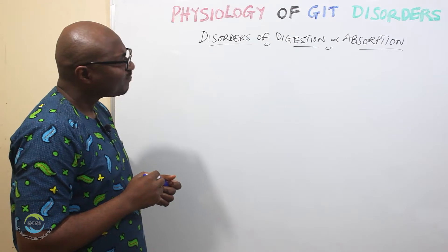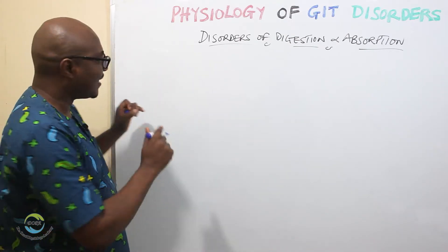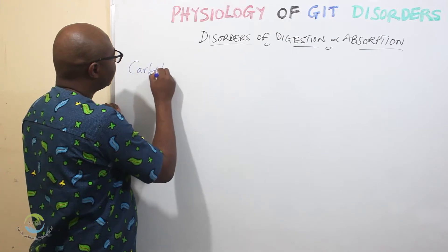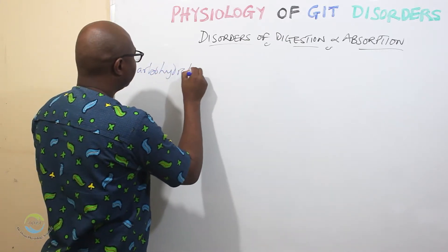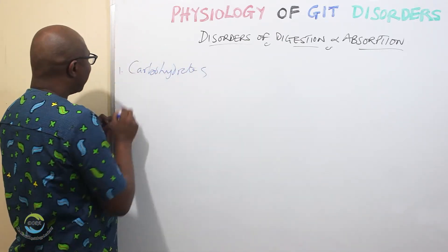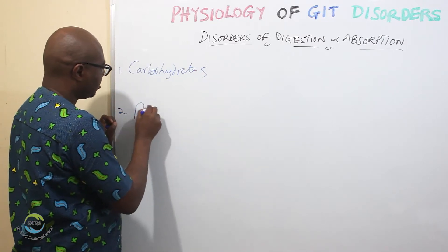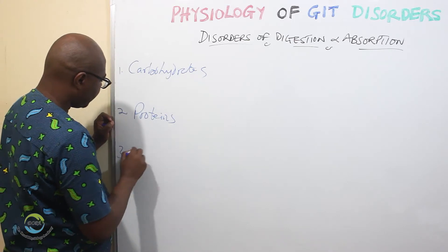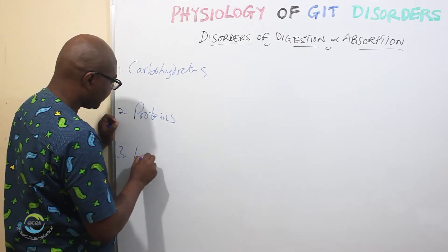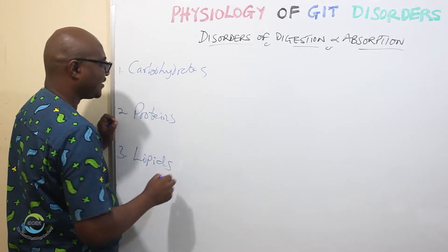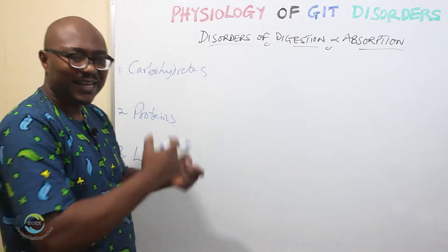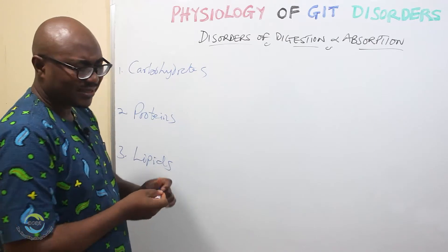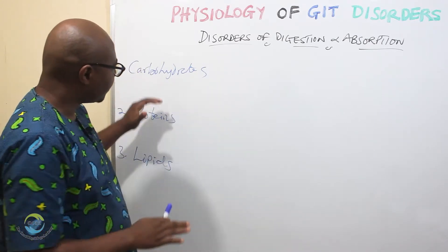We'll take it systematically. We have carbohydrates, proteins, and lipids — three major classes of nutrients that are digested and absorbed. We're going to look at the common disorders in each of them. Exhausting all the disorders here is beyond the scope of physiology, but we just want to touch on the common ones based on our understanding of normal function.